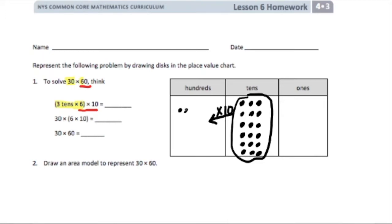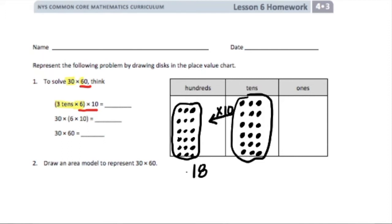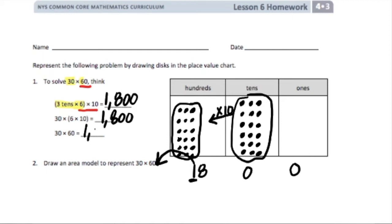So in the hundreds it would be three tens times six, which would then be three hundreds times six. Now what is that? That would be eighteen hundreds. We know that eighteen hundreds — I can take ten and that would be one thousand. So that would be one thousand and eight hundreds, or eighteen hundreds. So all of these answers: thirty times sixty is eighteen hundred, or one thousand eight hundred.